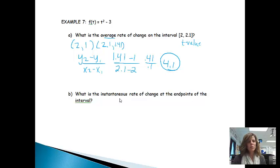The next question is, what is the instantaneous rate of change at the endpoints of the interval? So what is the rate of change at t equals 2? And what is the rate of change at t equals 2.1? Since it's instantaneous, it's asking for the derivative.